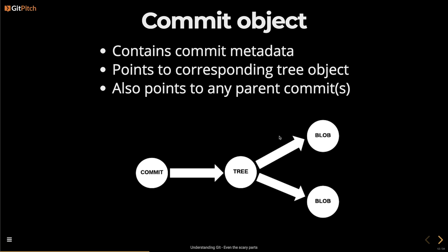The next object is a commit object, and this is probably the one that you're most familiar with. It points to the tree objects, which in turn point to the blobs. It contains information like committer info and author info. Not only does it point to the trees, but it also points to any parent commits. You might not have a parent commit if it's the first commit in a repository, and if it's a merge commit, it might have two parents.